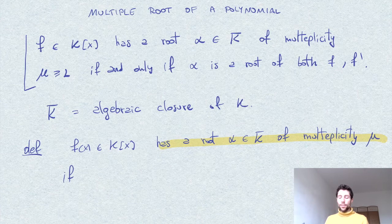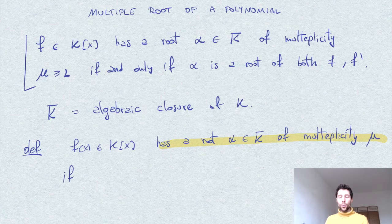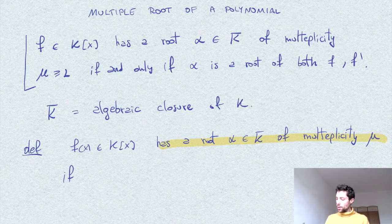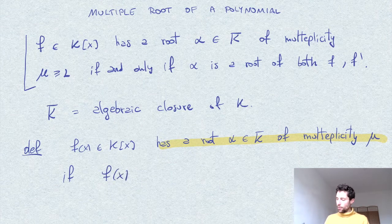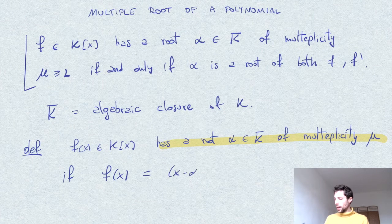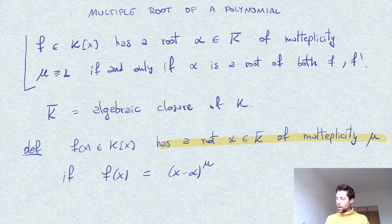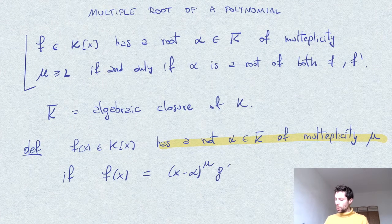so we can divide f with a polynomial x minus alpha to the power mu. So in other words, if we can write f of x as x minus alpha power mu times some polynomial g,